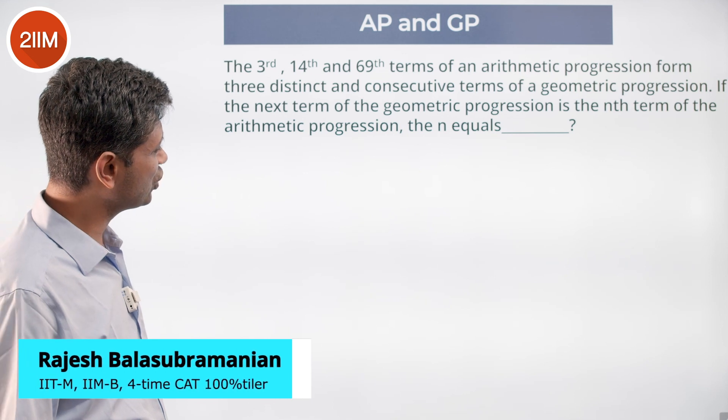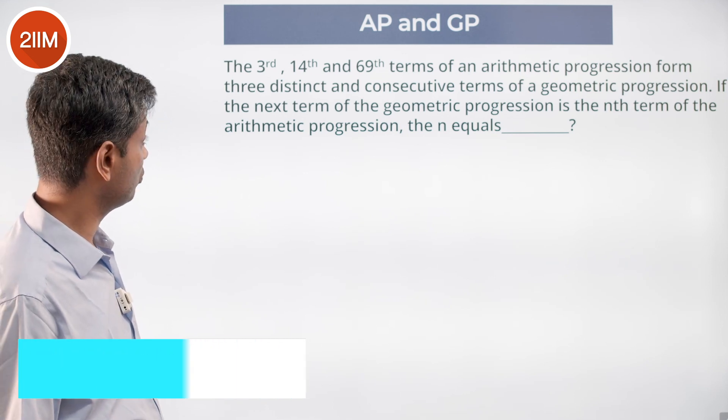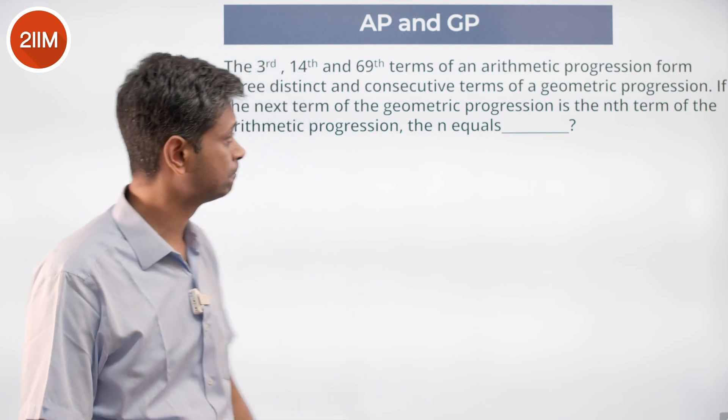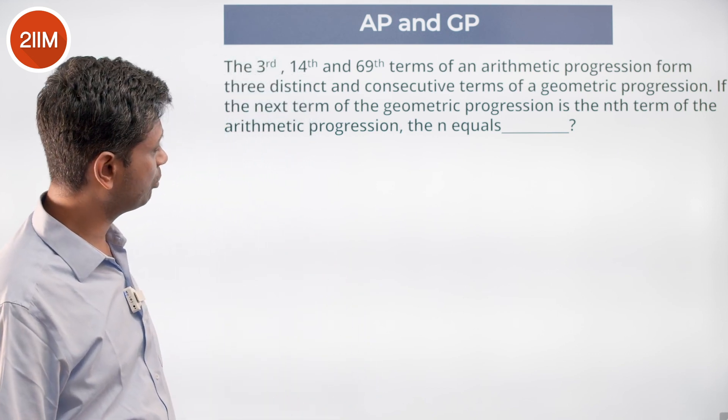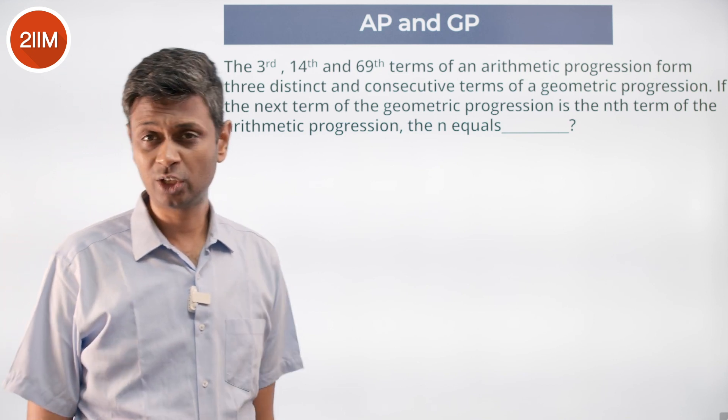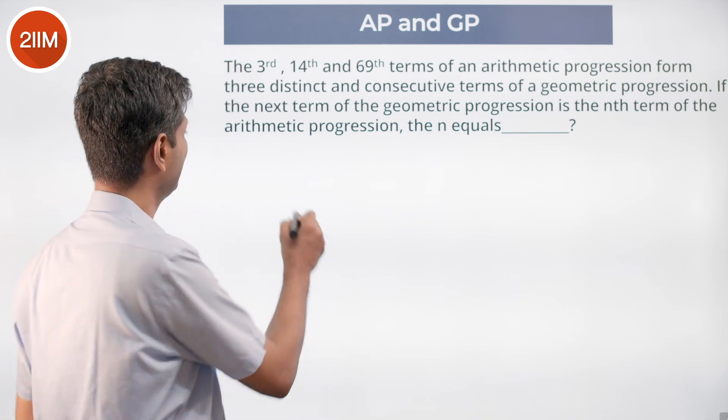The third, fourteenth and sixty-ninth terms of an arithmetic progression form three distinct and consecutive terms of a geometric progression. The next term of the geometric progression is the nth term of the arithmetic progression, then n equals...